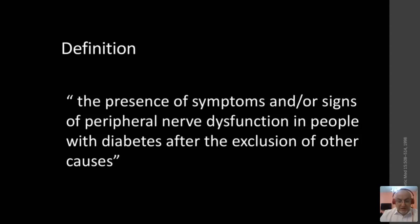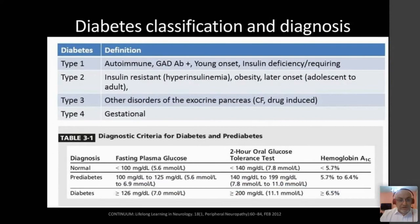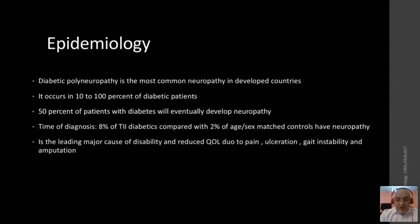This is the classification of diabetes and how to diagnose it — the majority of you are aware of these criteria. Diabetic neuropathy is currently the most common neuropathy in developed countries. We used to learn that the most common peripheral neuropathy in the world was leprosy, but I haven't seen any leprosy case in my life. Statistics now show that diabetic neuropathy is truly the most common neuropathy in both developed and developing countries.